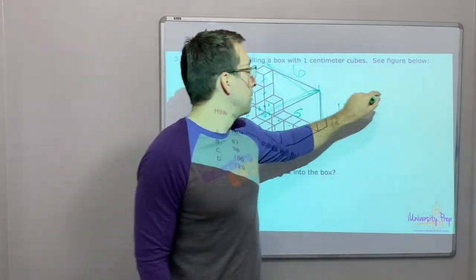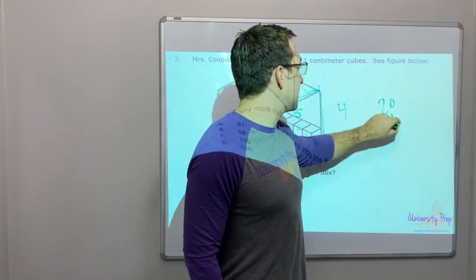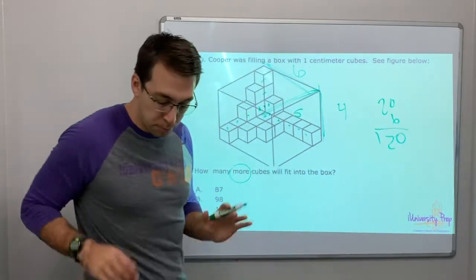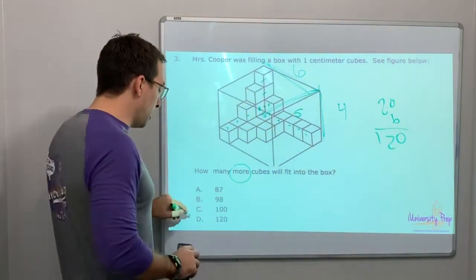Five times four is twenty. Twenty times six is zero, one hundred twenty. So the cube, look, one hundred twenty.